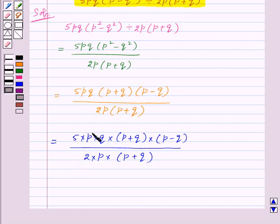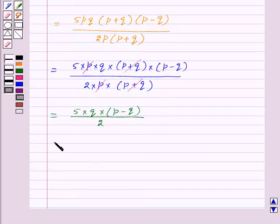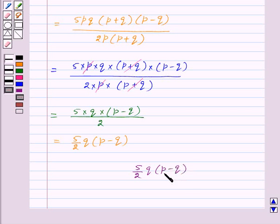So in this we have p common and the factor p plus q is common. So here we are left with 5q into p minus q upon 2, which is the required answer to this question.